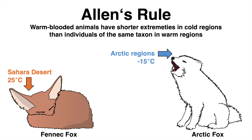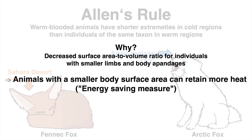Similar observations have already been documented for other animals such as rabbits. The rule was proposed by the American zoologist Allen in the 19th century. It states that colder temperature correlates with shorter protruding body parts. Larger body appendages such as the huge ears of the fennec fox are advantages in warm climates as they offer a large surface area, allowing the fennec fox to emit more heat. Large limbs and an increased surface area to volume ratio would be disadvantages in cold environments. Thus, to retain more heat, the arctic fox possesses short legs and ears to decrease the animal's surface area.